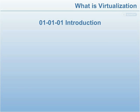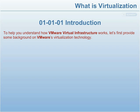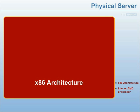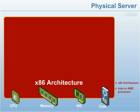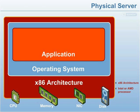Introduction to help you understand how VMware virtual infrastructure works. First, some background on VMware's virtualization technology. The traditional physical hardware server or workstation is an x86-based system with an Intel or AMD processor like Pentium 4 or Opteron, with devices such as disks, network cards, memory, CPU, and so on, plus an operating system and applications. Each layer of the architecture is tightly tied to the layer below, and ultimately to the hardware.